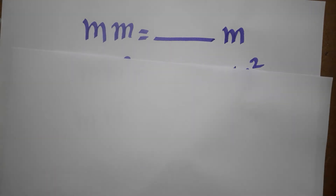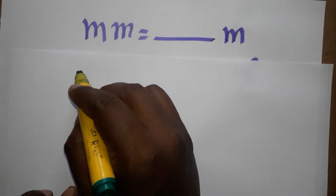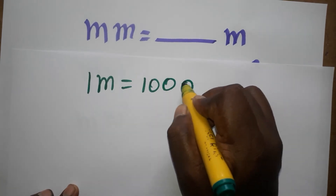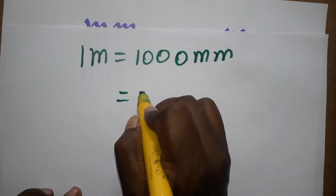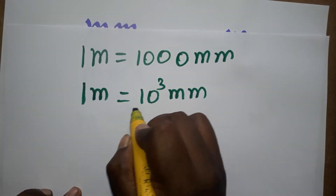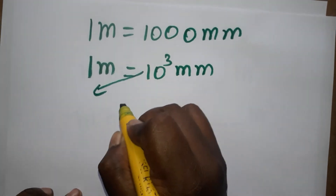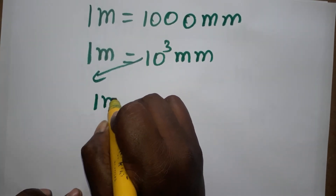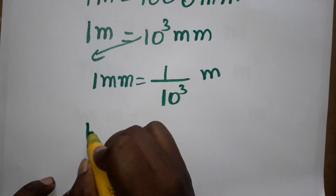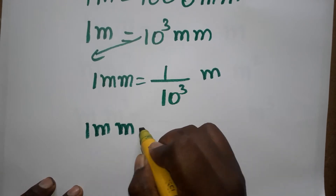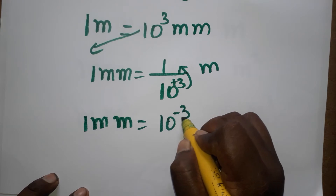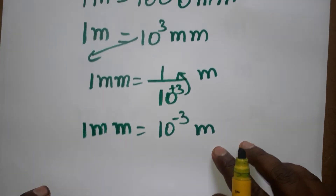So first I am going to teach you how to convert millimeter to meter. One meter is equal to one thousand millimeter, which we can write as 10 power 3 millimeter. Bringing this to the denominator, one millimeter is equal to one divided by 10 power 3 meter, which gives us 10 power minus 3 meter. So one millimeter is equal to 10 power minus 3 meter.